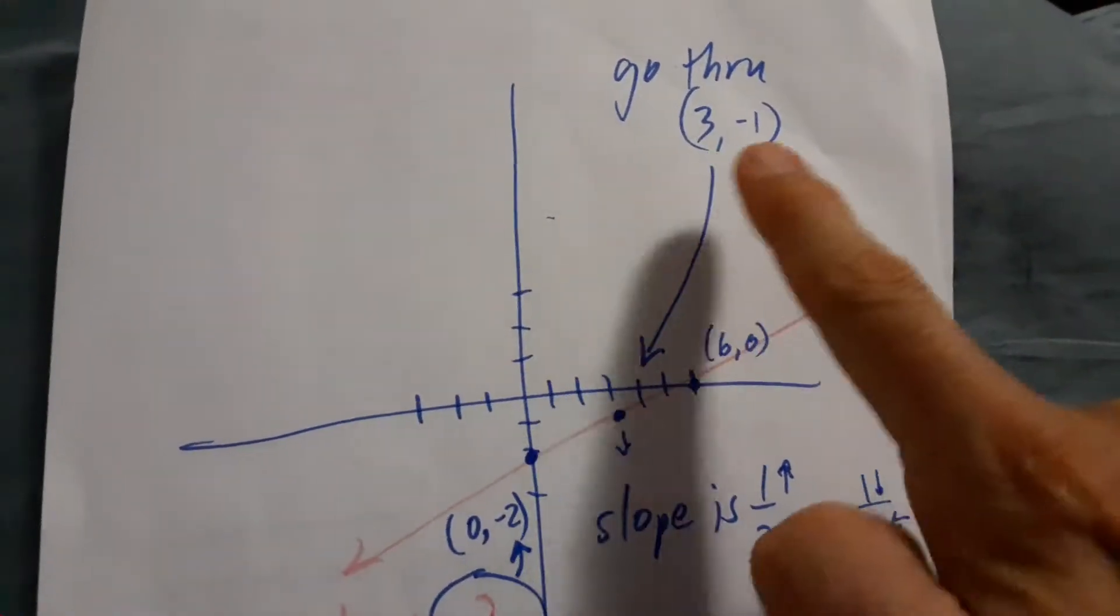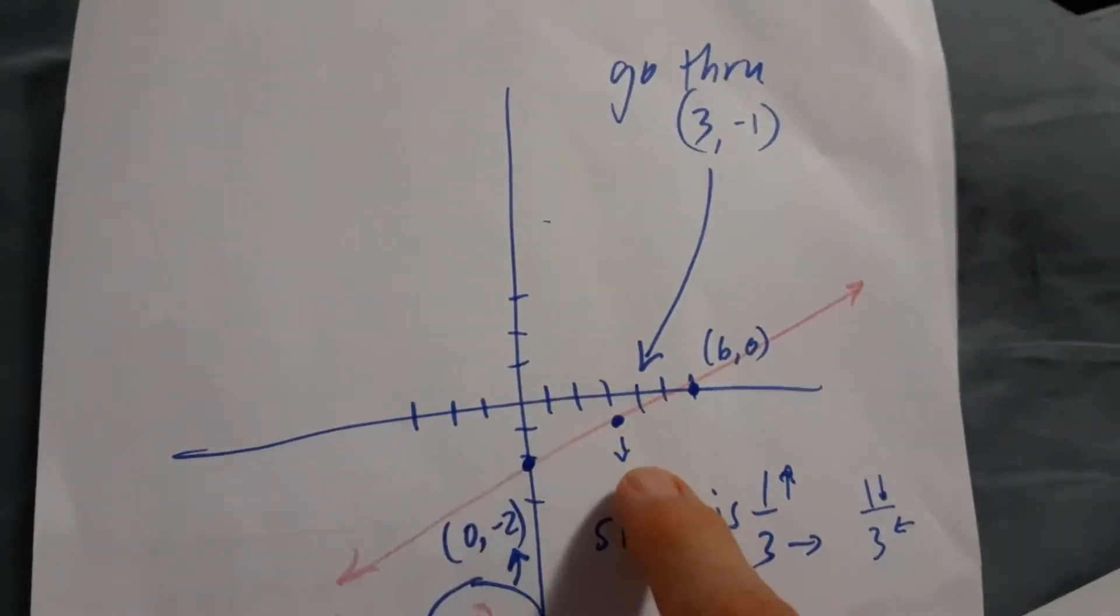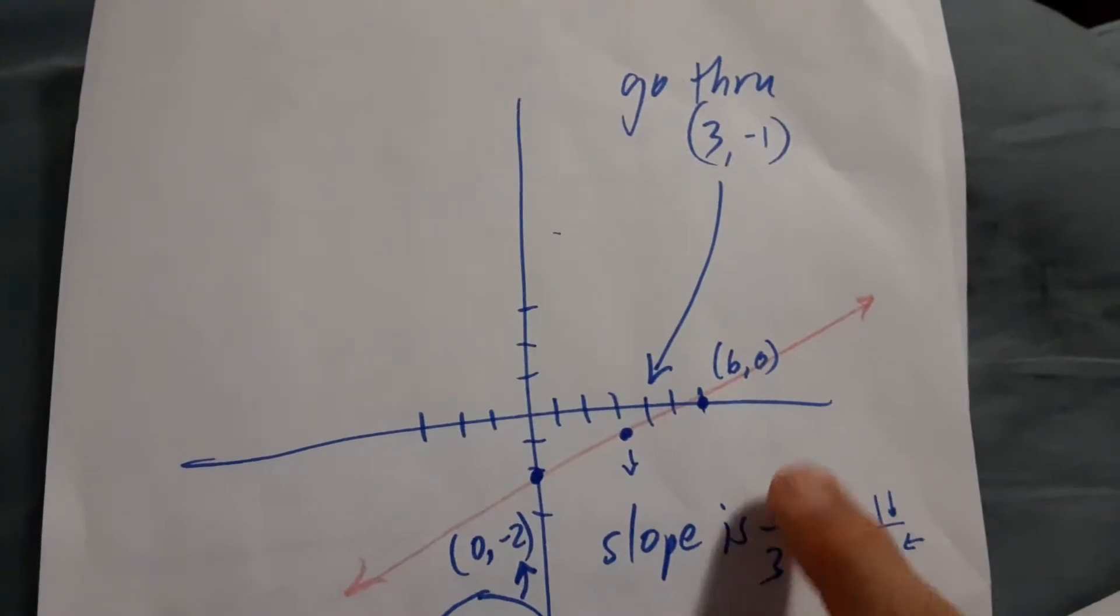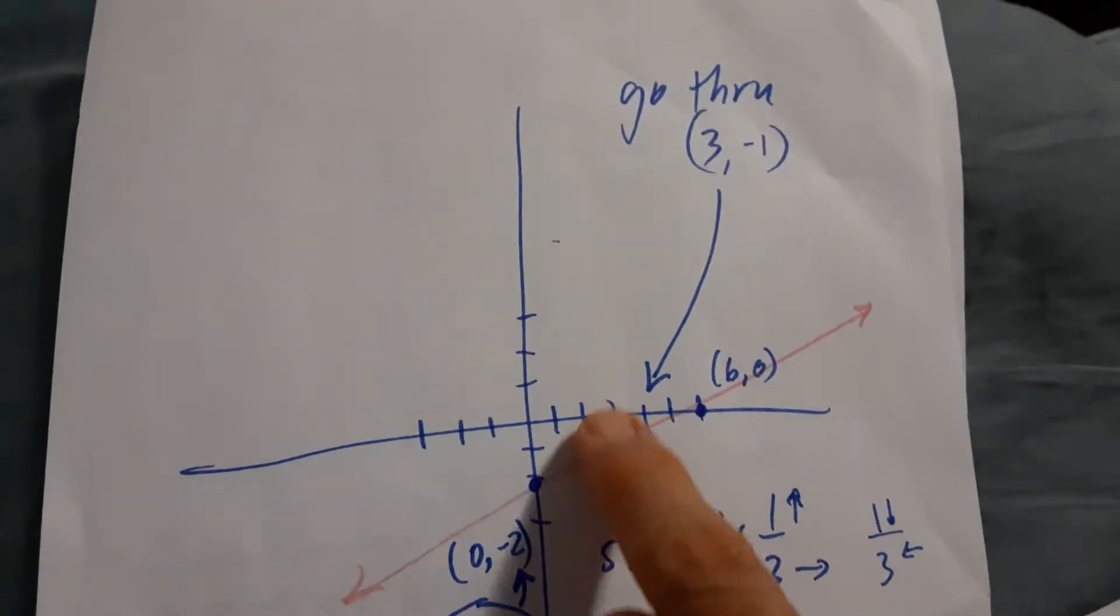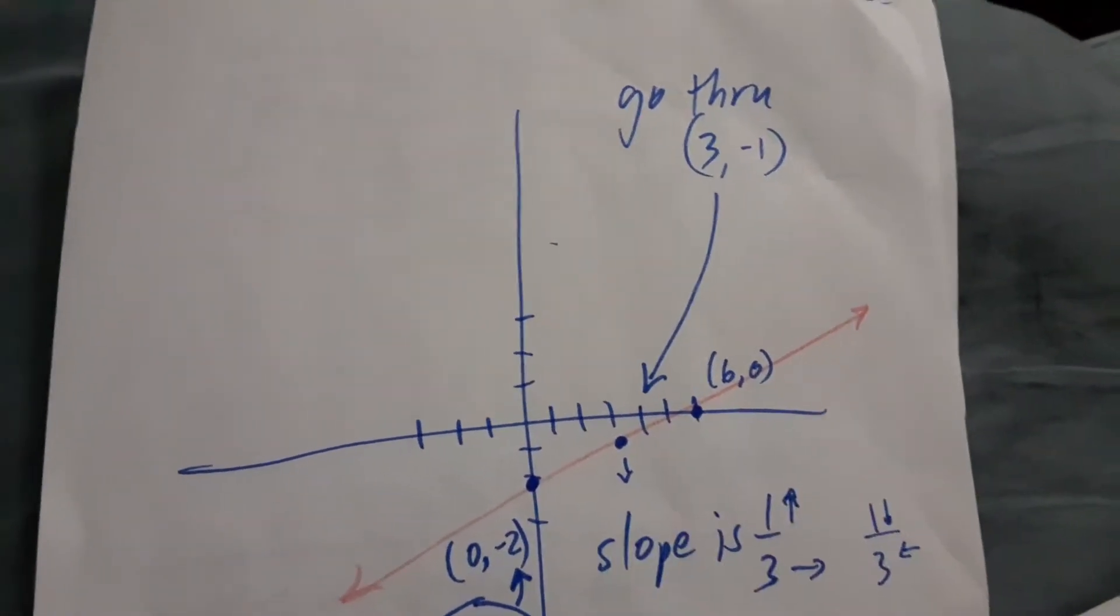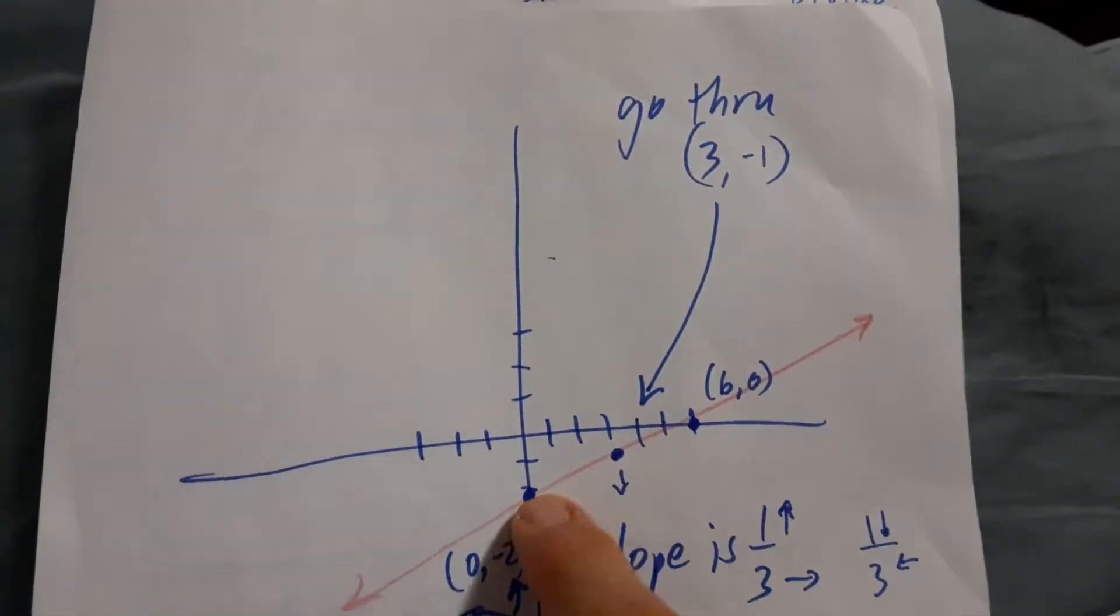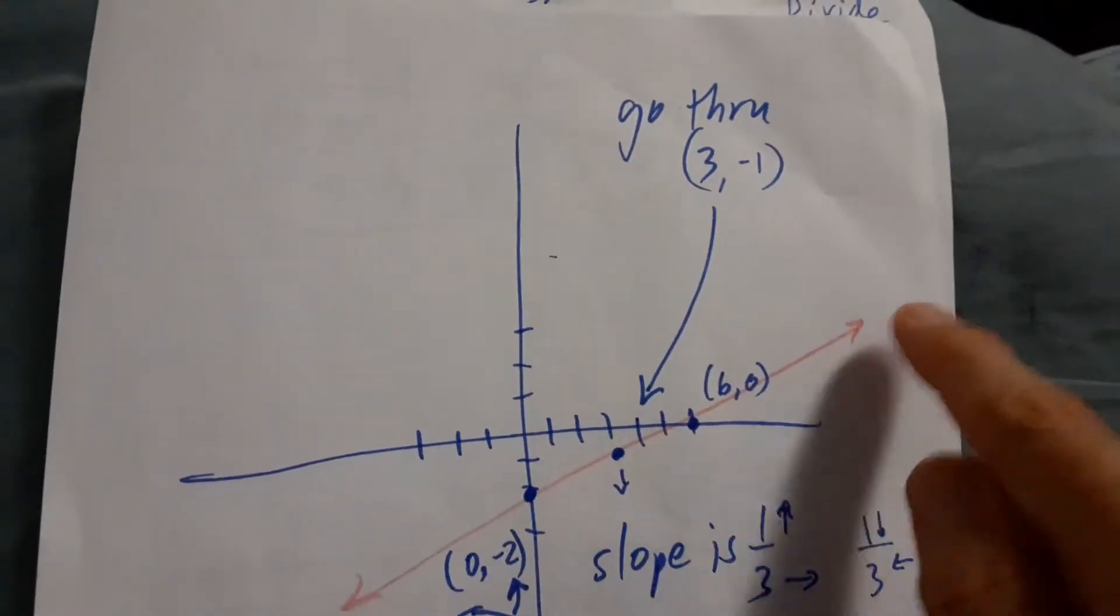It's got to go through 3, negative 1, so there's my 3, negative 1. Now, I can go with one-third, it's up one over, up one over, so it gets there. I can also go down one to the left 3. Down one to the left 3. So now I've got 3 points.